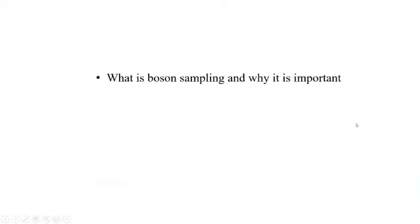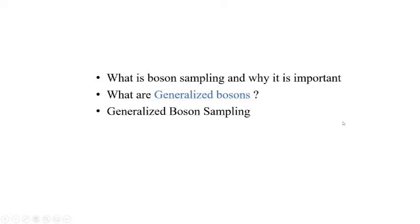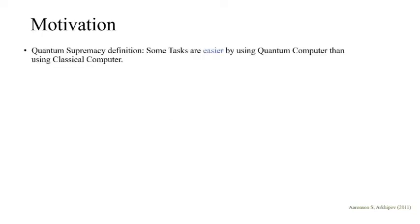Let me talk about motivation. Why is Boson Sampling important? What are generalized bosons? We'll discuss generalized Boson Sampling and a possible implementation. The quantum supremacy definition is that some tasks are easier using a quantum computer than a classical computer. How to define easier? Basically, polynomial time versus exponential time.